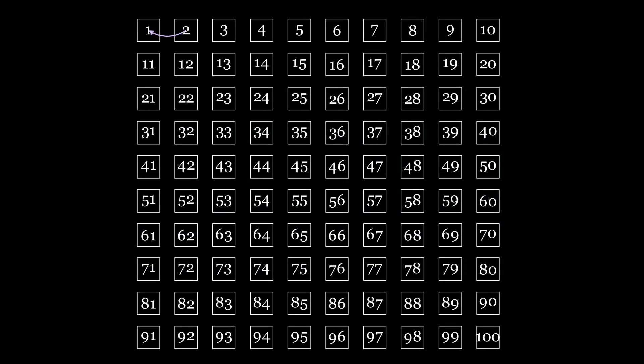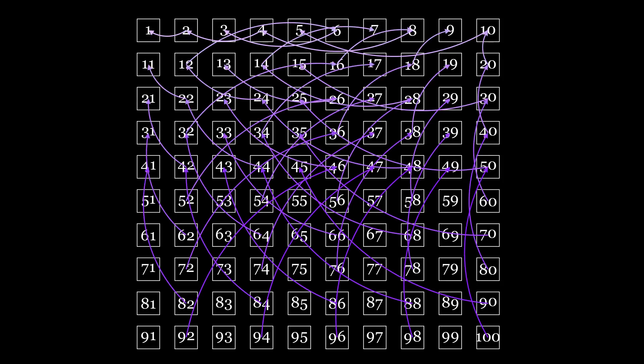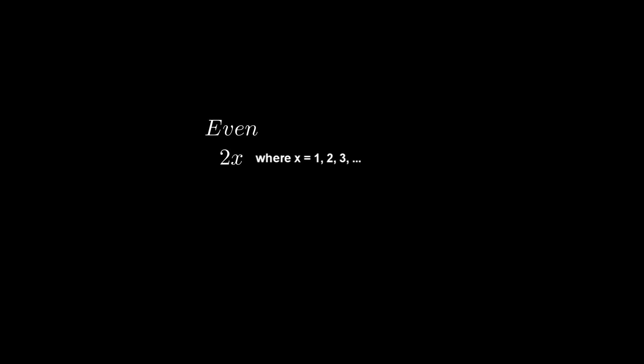All the even numbers will take exactly one step to get lower than its starting number, as we will divide by 2 on the first step. This can be shown by thinking of an even number as 2x. Since it is even, we divide by 2, and this is lower than our starting value.